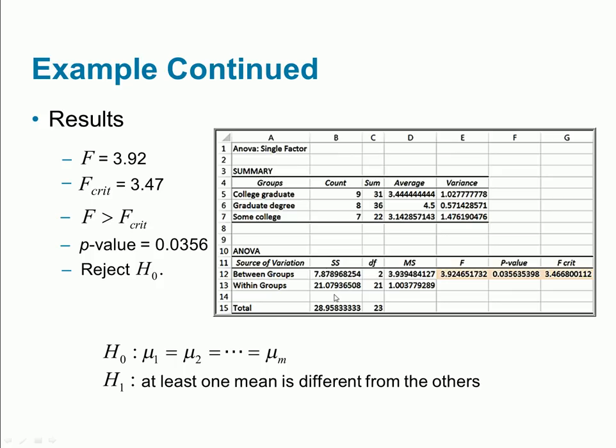We're not doing hand calculations, so it's tricky to explain this. But you can check the F-square test within group and between group calculations—it's a straightforward calculation.